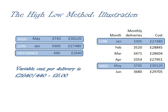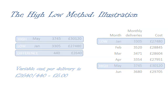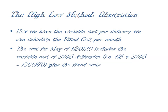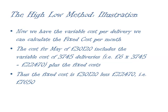What I've yet to calculate is my fixed cost. I know that the total cost for May is £30,120, and that includes my variable cost for 3,745 deliveries and the fixed costs. My total variable cost is £6 per delivery times 3,745 deliveries, which gives a variable cost for May of £22,470. If I take that away from my total cost of £30,120, that gives me my fixed cost of £7,650. I now know both my variable cost per unit and my fixed cost per month.